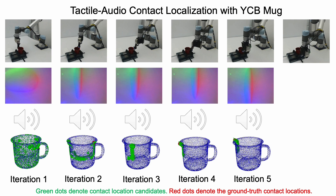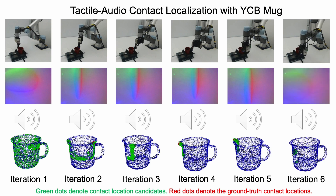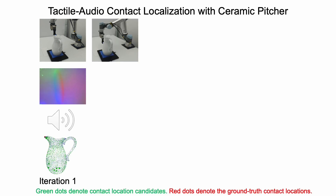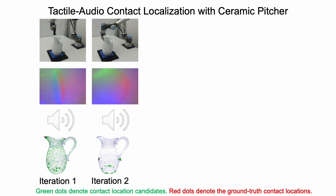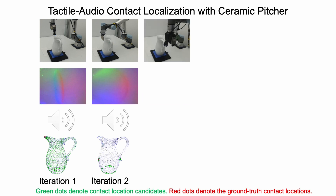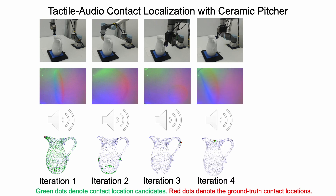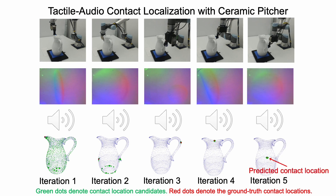After several iterations, in the final iteration, the green particles converge to the red particle, which is the ground truth contact location. Here is another example with a ceramic pitcher. Leveraging features extracted from our simulated data, we can successfully predict contact locations in real-world experiments.